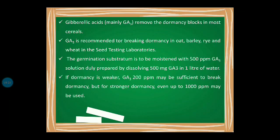If dormancy is weaker, then a 200 ppm solution is sufficient to break down the dormancy. But for a stronger dormancy, even up to 1000 ppm may be used. Always remember that the concentration can vary — more or less, 500 ppm is commonly used.